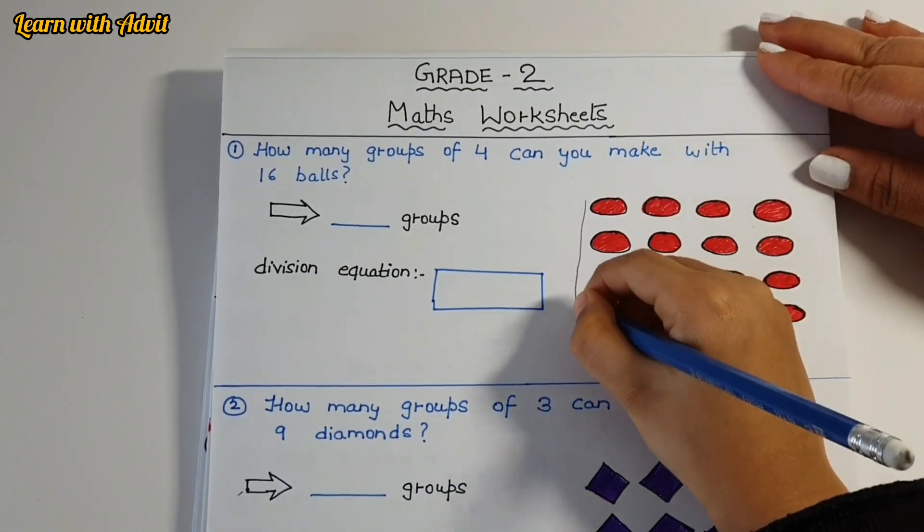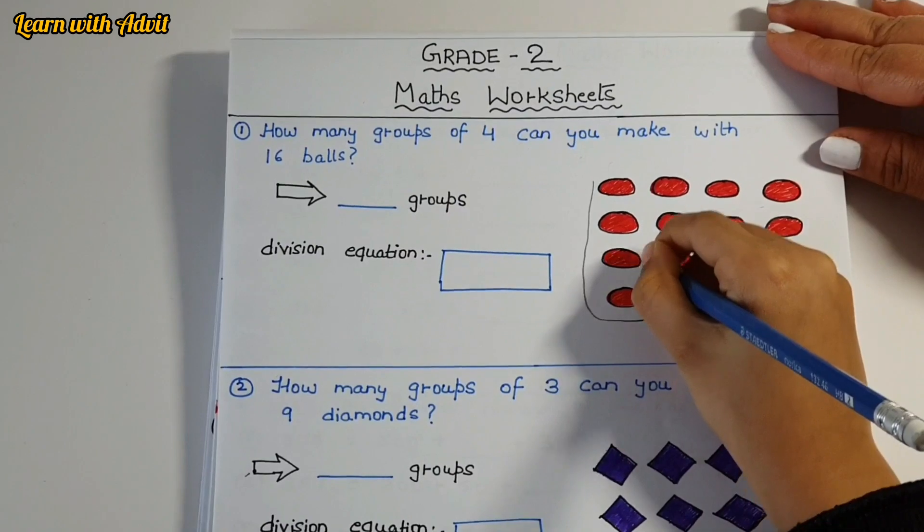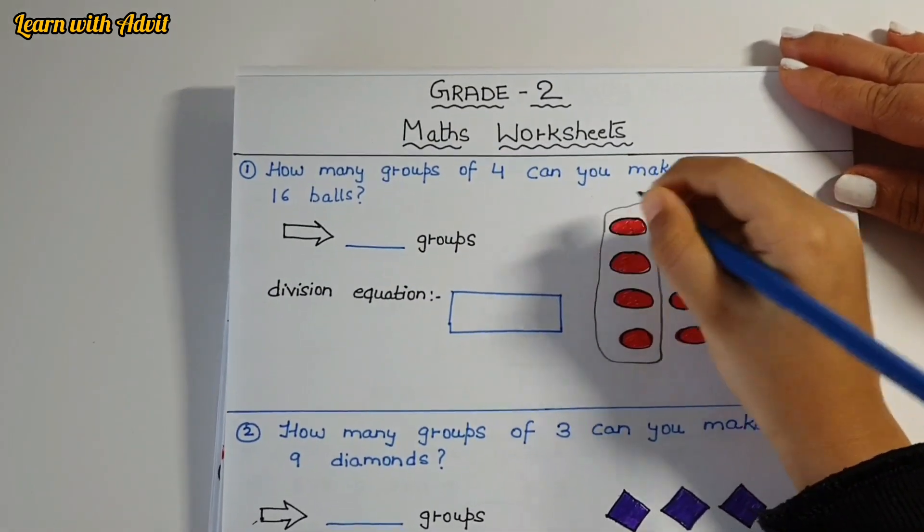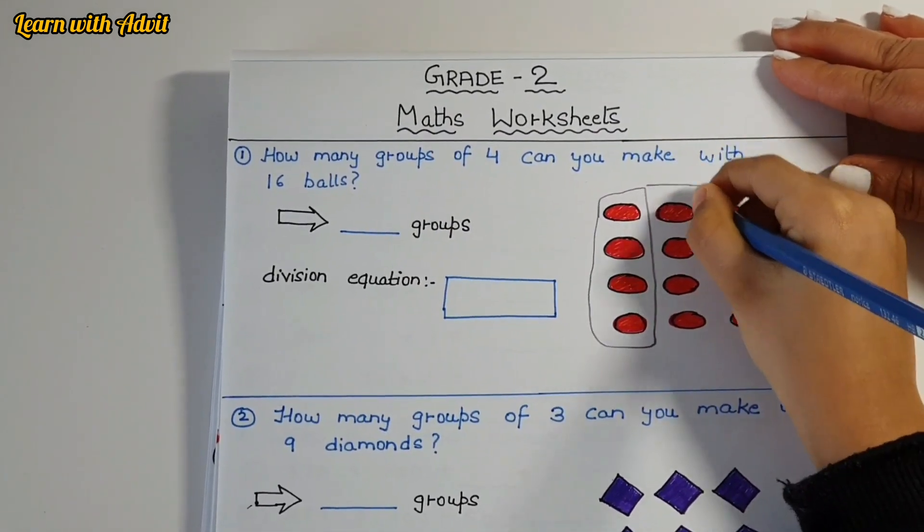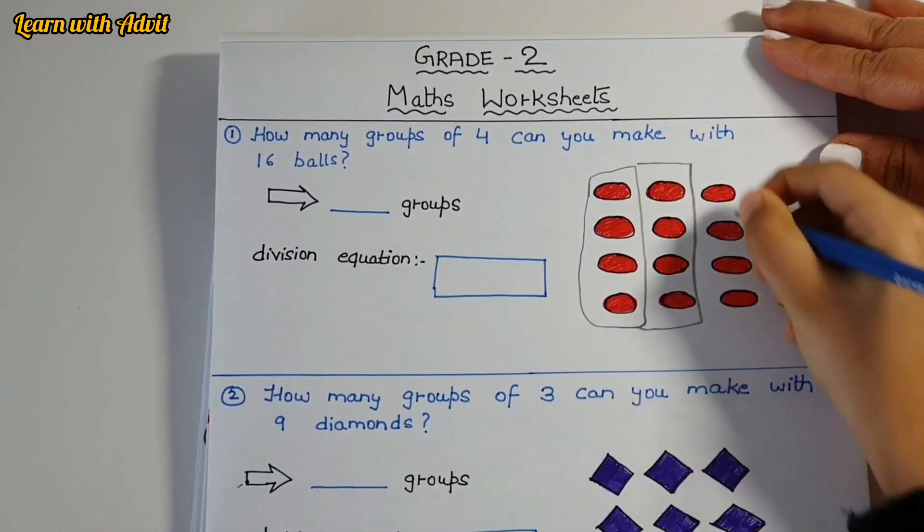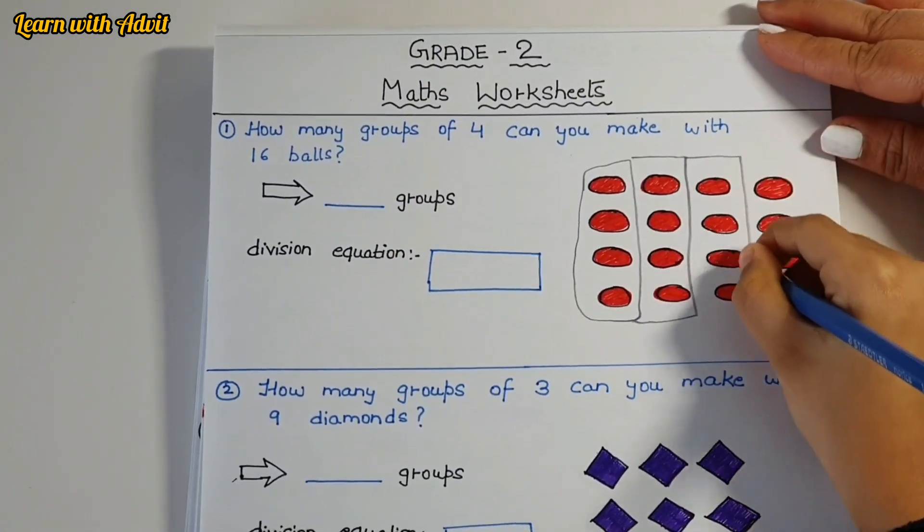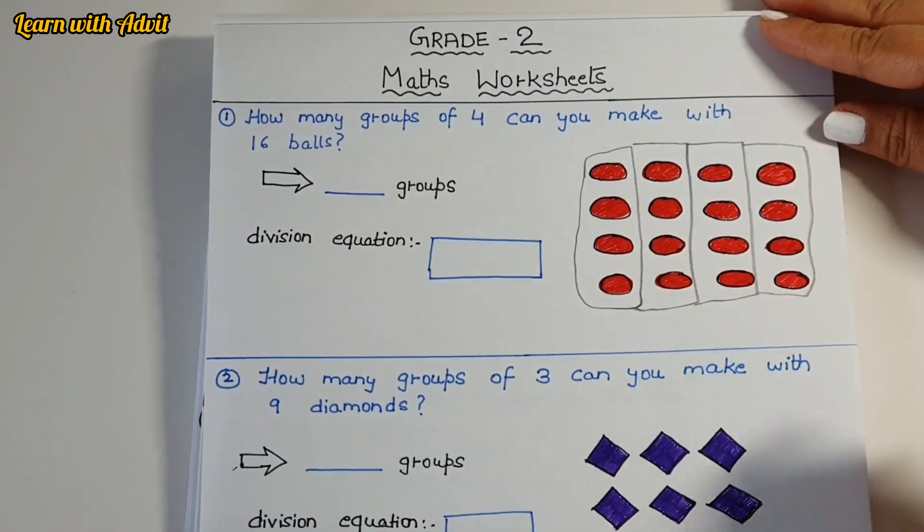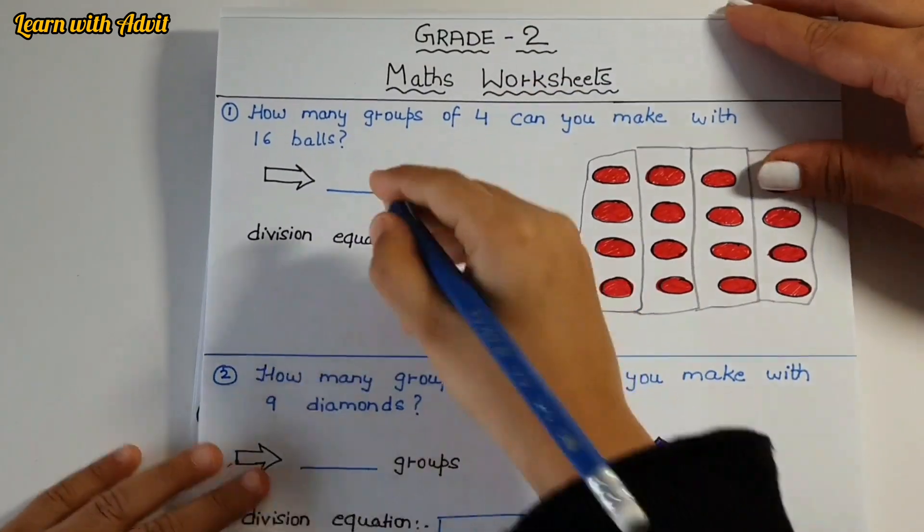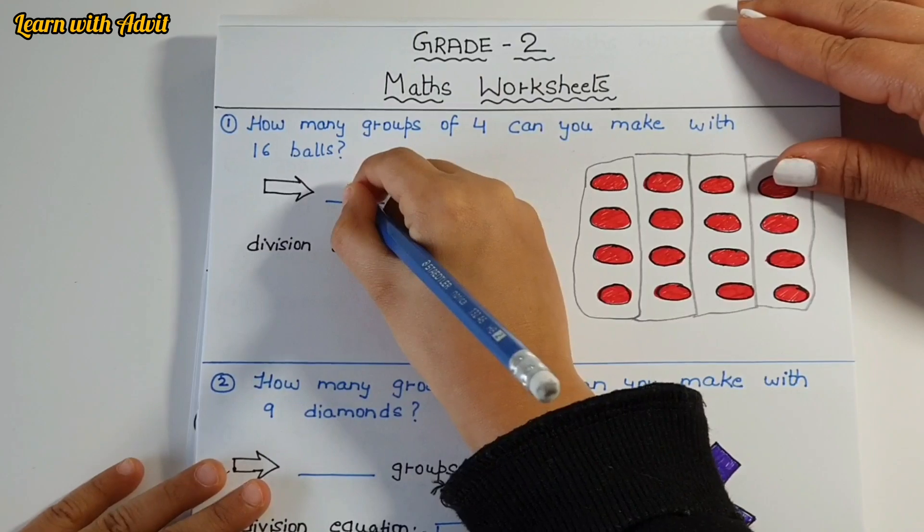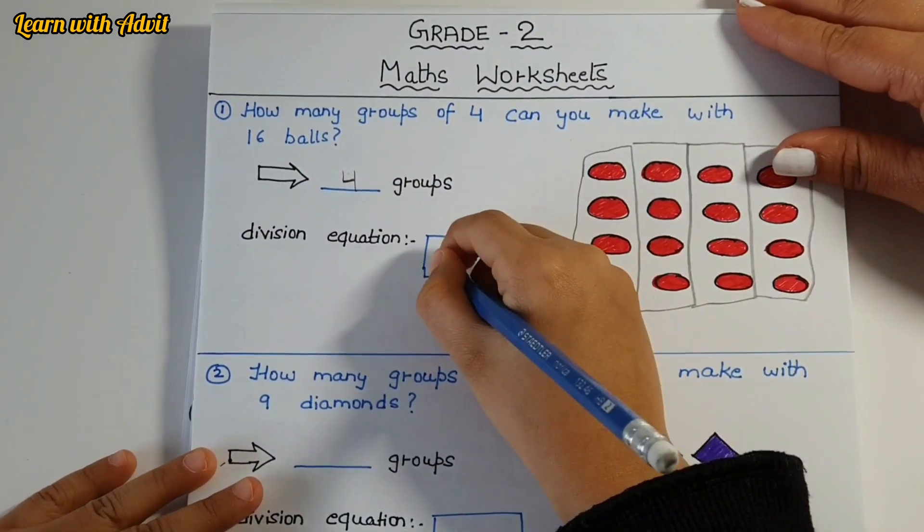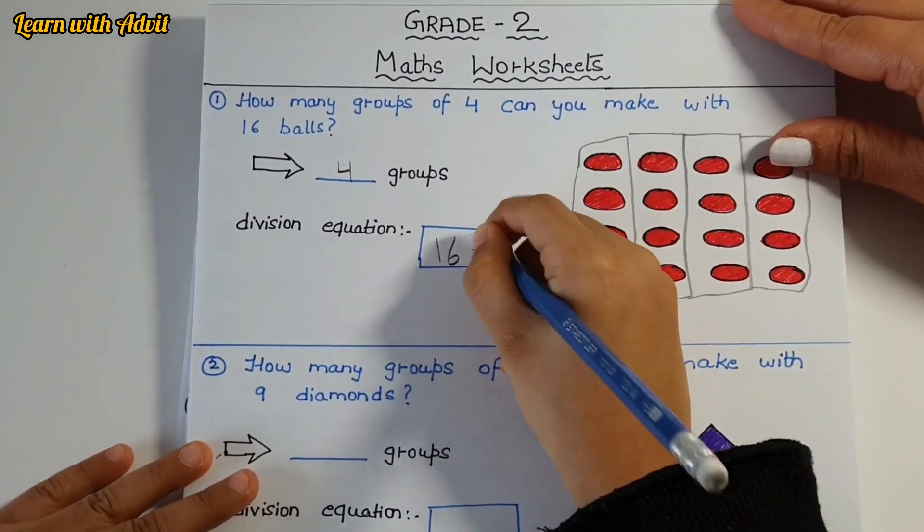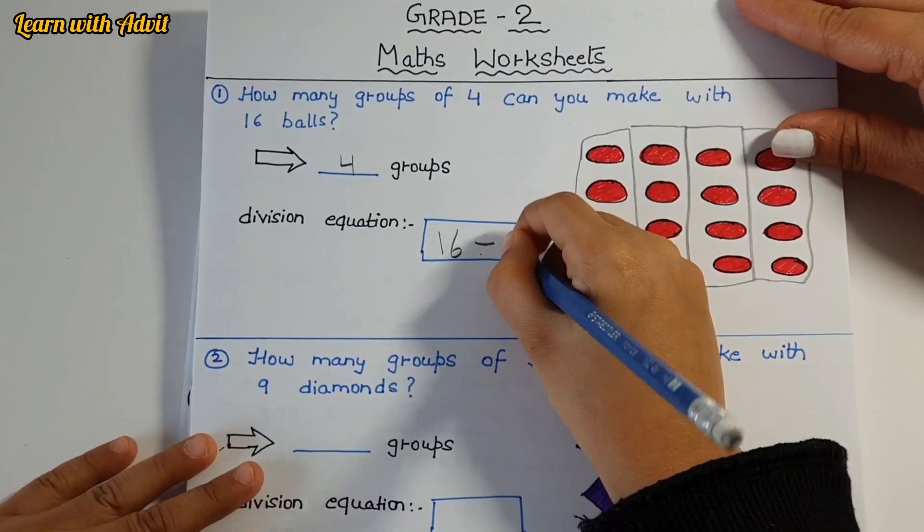How many groups of 4 can you make with 16 balls? One column of four, two columns of four, three columns of four, four columns of four. That means four groups. Write it down here and write the division equation: 16 divide by 4. Good job.